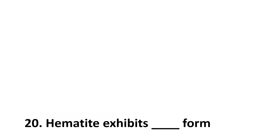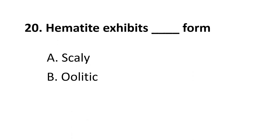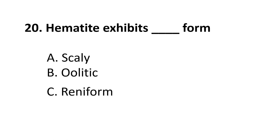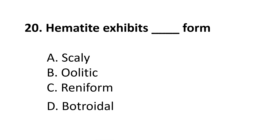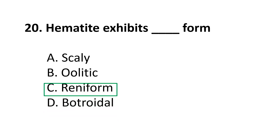Question 20: Hematite exhibits which type of form? A. scaly, B. oolitic, C. reniform, D. botryoidal. The correct answer is C, reniform.